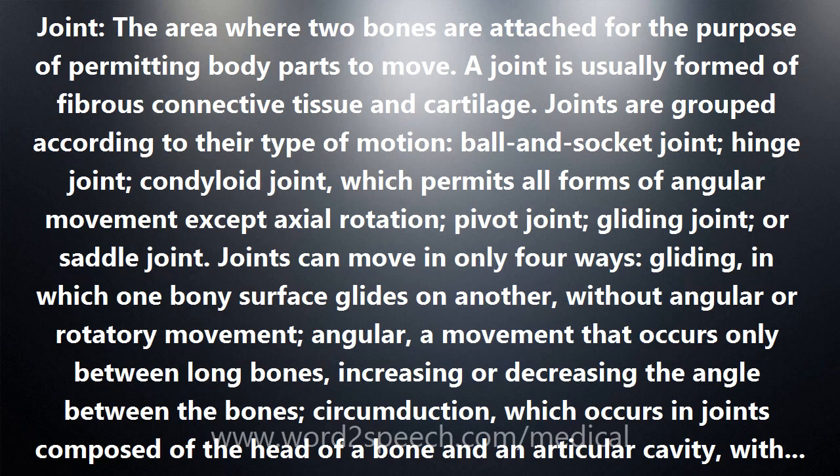Joints can move in only four ways: gliding, in which one bony surface glides on another without angular or rotatory movement; angular, a movement that occurs only between long bones, increasing or decreasing the angle between the bones; circumduction, which occurs in joints composed of the head of a bone and an articular cavity, with the long bone describing a series of circles and the whole forming a cone; and rotation, in which a bone moves about a central axis without moving from this axis.